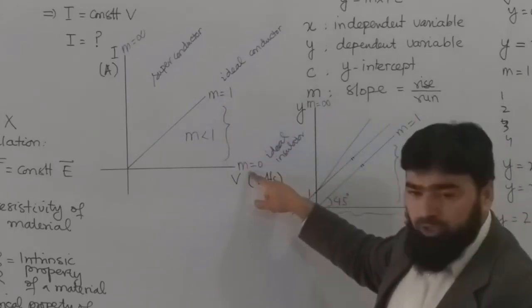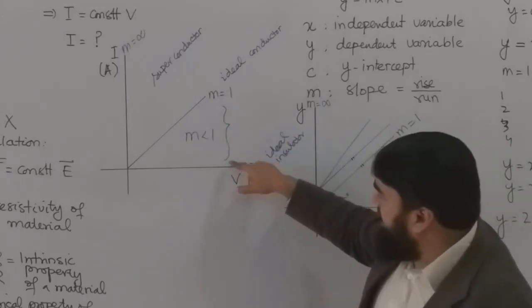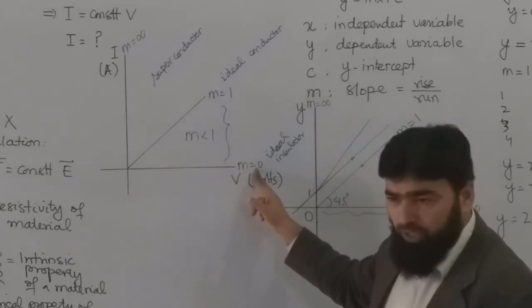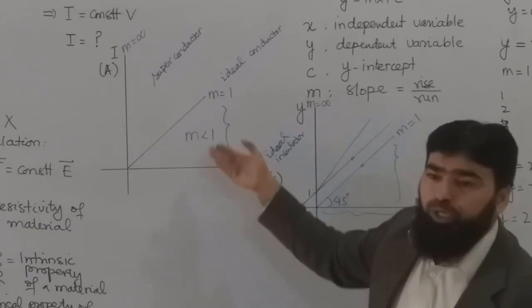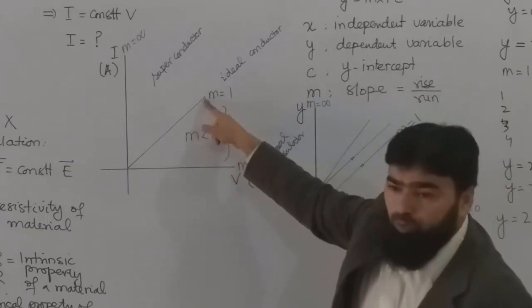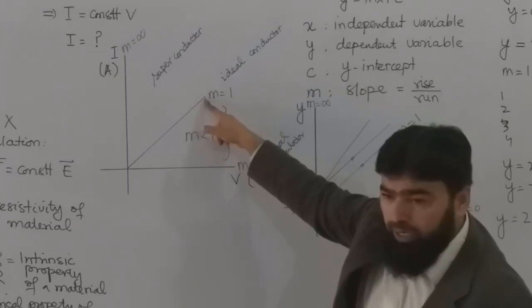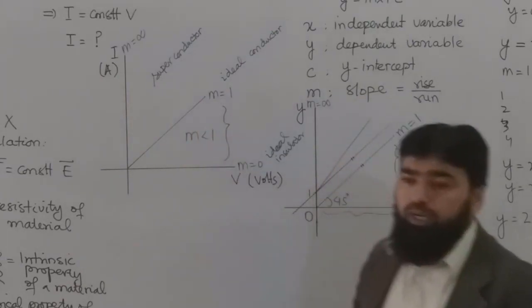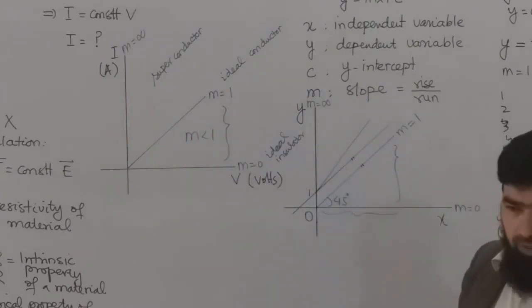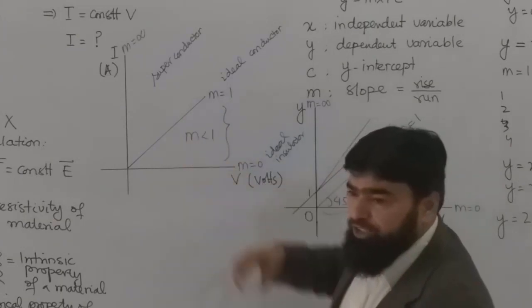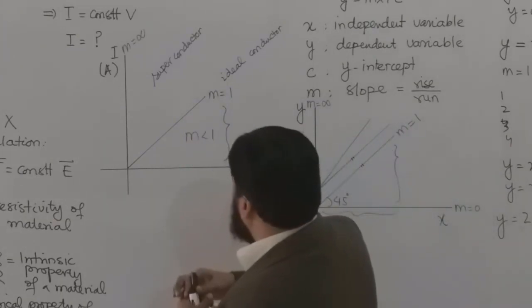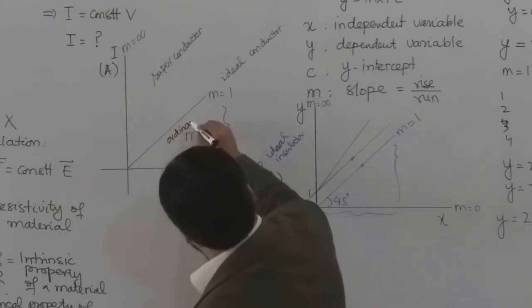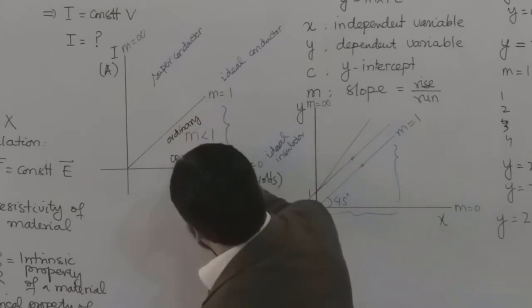Because here m is 1, here m is 0. Above this line which you plot, a straight line will have its slope greater than 0, like 0.1, 0.2, and so on. The maximum will reach here which will be equal to 1, and then it will be m greater than 1, and here it becomes undefined. So we are in this range that is called the ordinary conductor range.